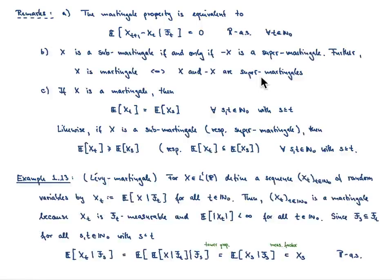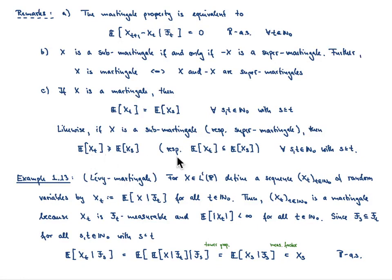A third remark concerns the expectation of the process. If x is a martingale, then the expectation of the process is constant in time. Whereas in the case of a sub-martingale, the expectation is increasing in time, and for a super-martingale it is decreasing in time.